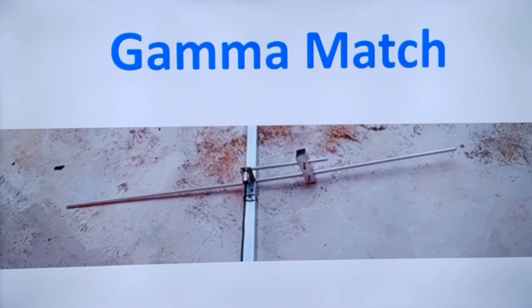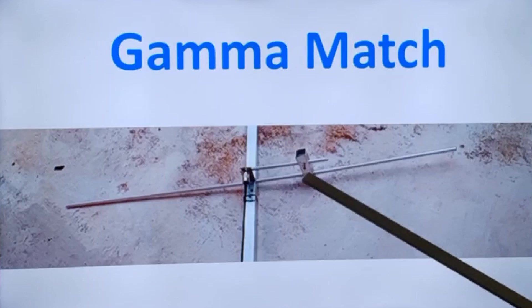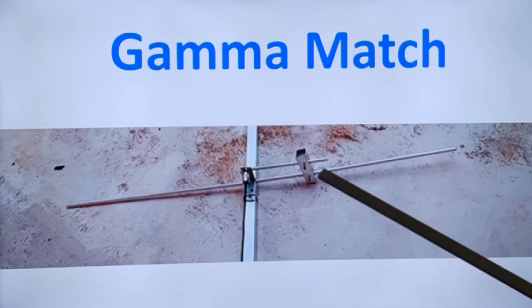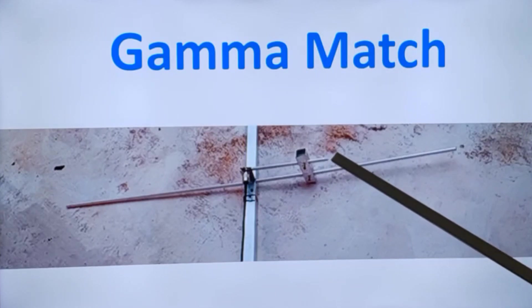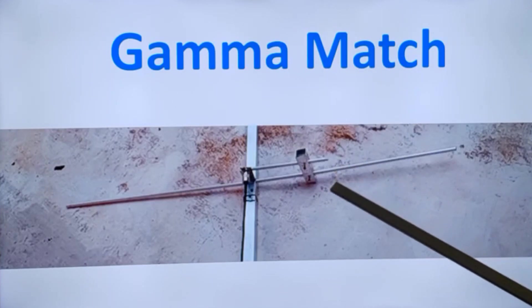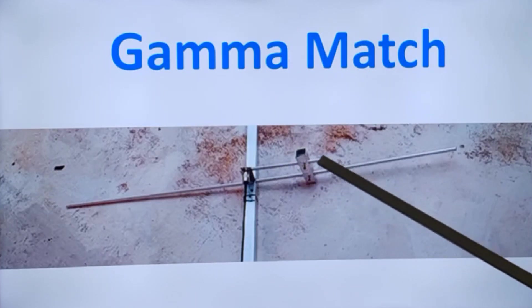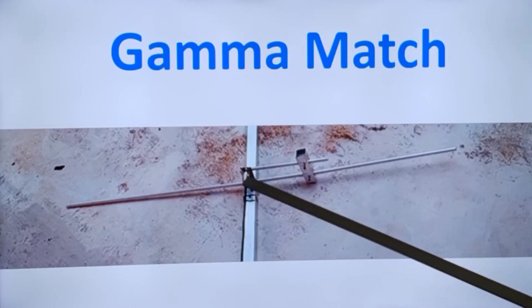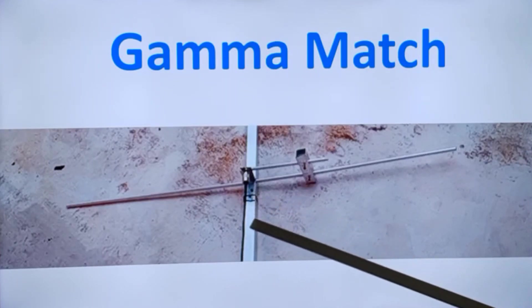Sometimes instead of using a capacitor, a coax may be used for the gamma match. Here you can see this is the connecting step and this is the gamma rod. In this region, this is an aluminum pipe and inside you can see a piece of coax without the outer covering. The outer covering of the coax is removed and the insulator and inner conductor are placed inside this gamma rod.